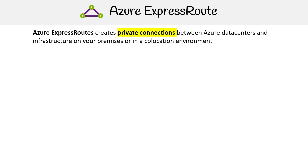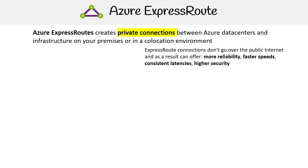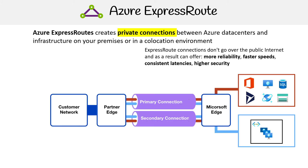Azure ExpressRoute creates private connections between Azure data centers and infrastructure on your premises or in co-location environments. Connections don't go over the public internet, and as a result, offer more reliability, faster speeds, consistent latencies, and higher security.